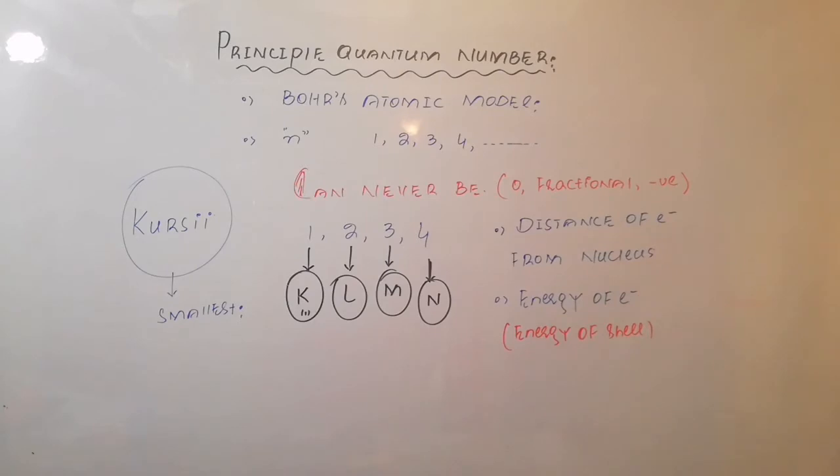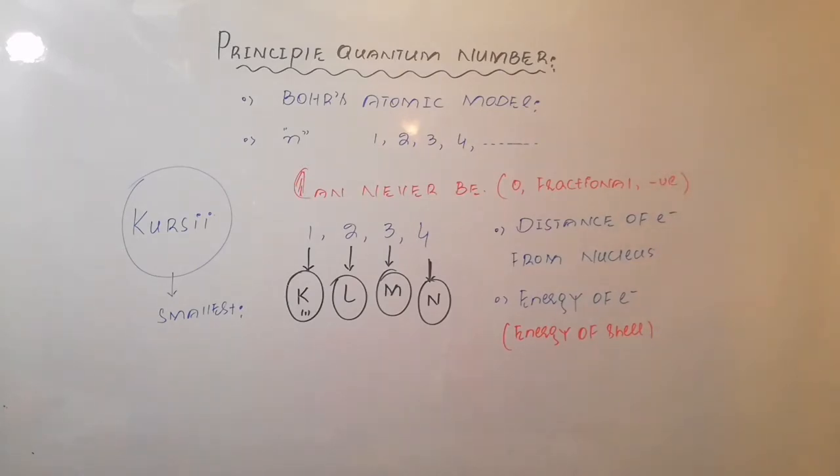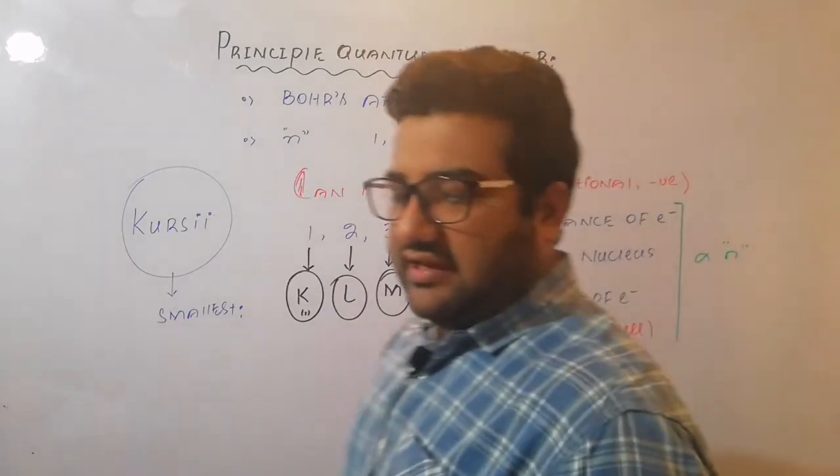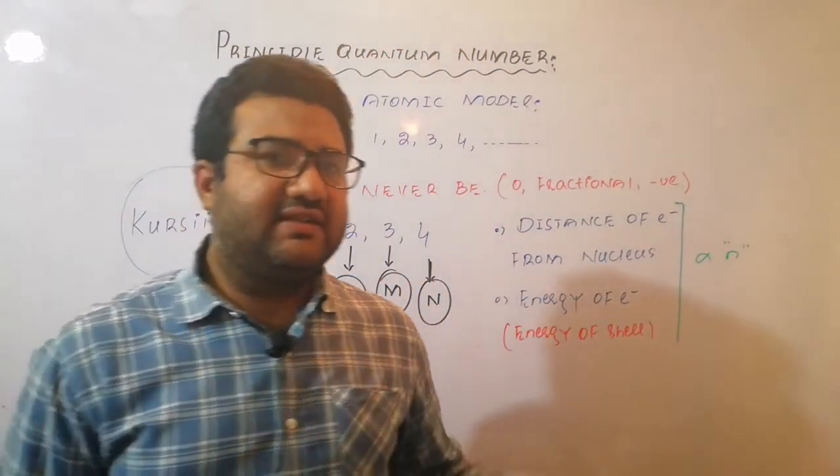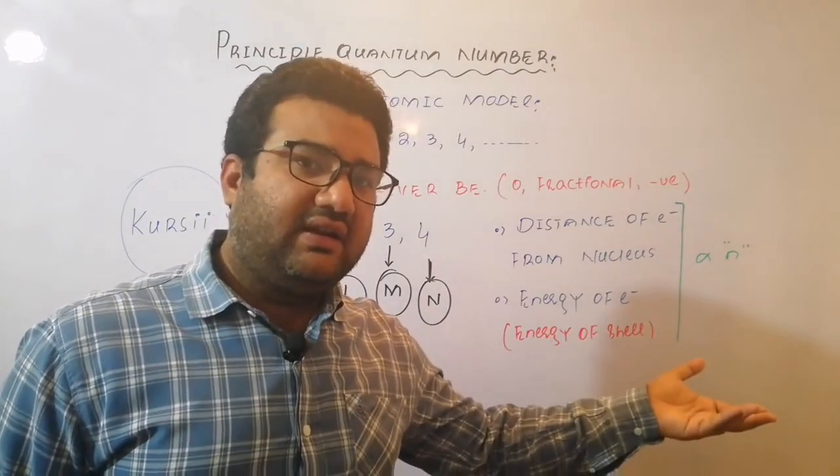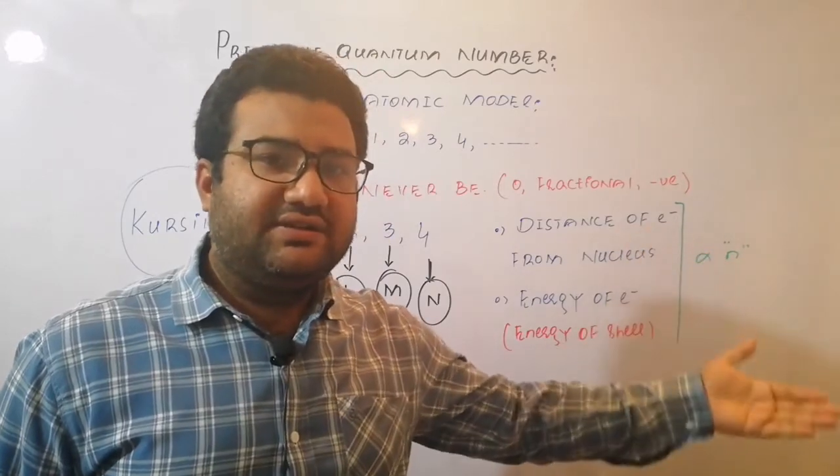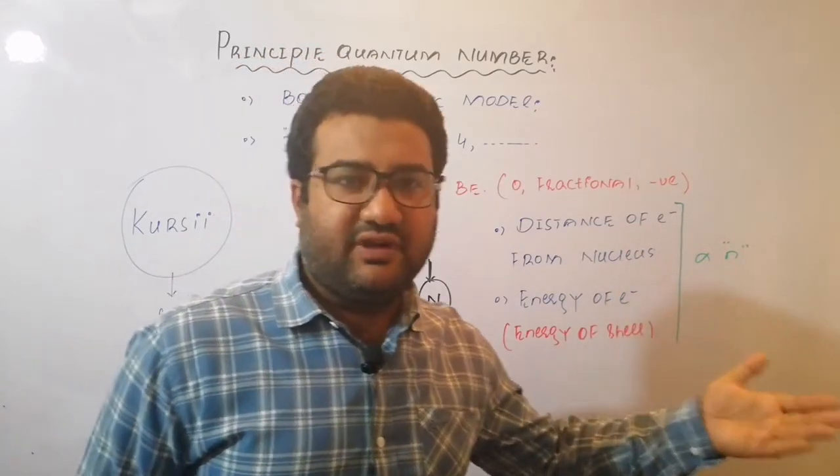So energy of electron or energy of shell, both are the same. And both these factors are directly proportional to n. Greater the value of n, the distance of electron from nucleus will be greater. And greater the value of n, the energy of the shell or the energy of the electron will be higher.